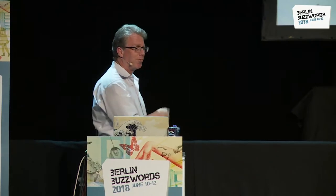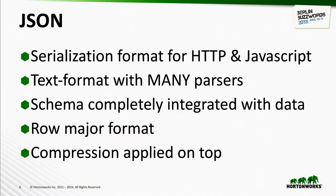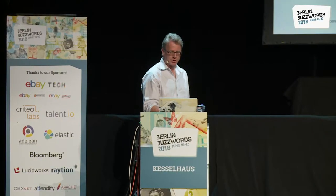Avro was named after an airplane company that Doug's son liked. Hadoop, of course, got its name because that was his son's name for a stuffed elephant. JSON is incredibly common — a serialization format for HTTP and JavaScript, a text format with many parsers. The schema is completely integrated with the data, so you have to read the whole thing to figure out what types are in there. It's a row-major format, and compression is usually applied on top.